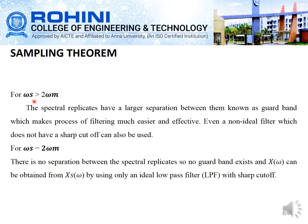If ω_s is greater than 2·ω_m, the spectral replicates have a larger separation between them, known as the guard band, which makes filtering much easier and effective. Even a non-ideal filter that does not have a sharp cutoff can also be used. If the two frequencies are equal, there is no separation between the spectral replicates, so no guard band exists and X(ω) can be obtained from X_s(ω) only by using an ideal low-pass filter with a sharp cutoff.